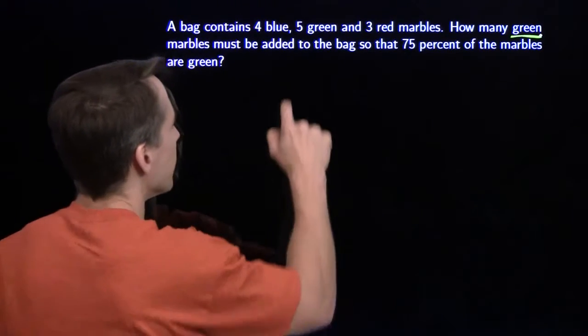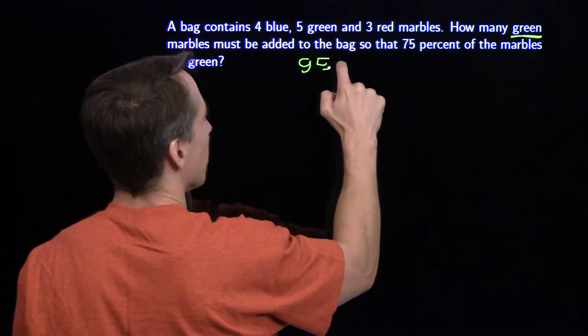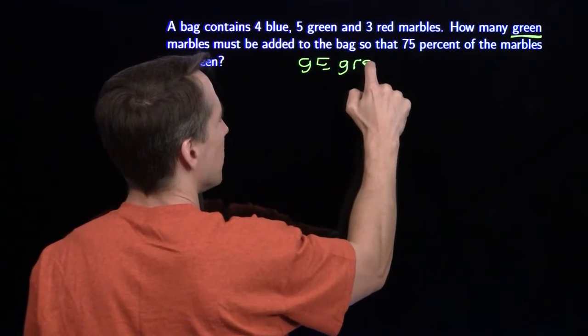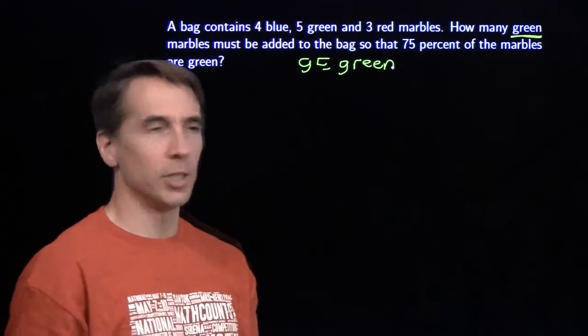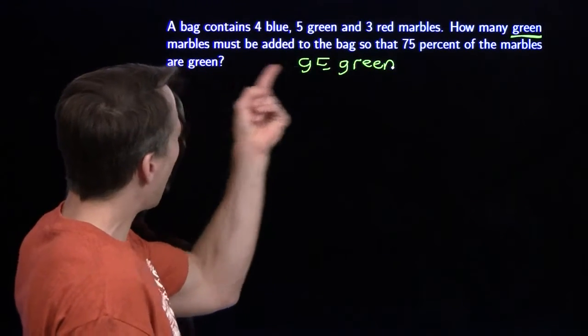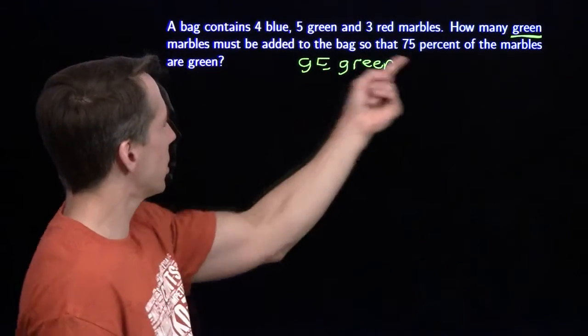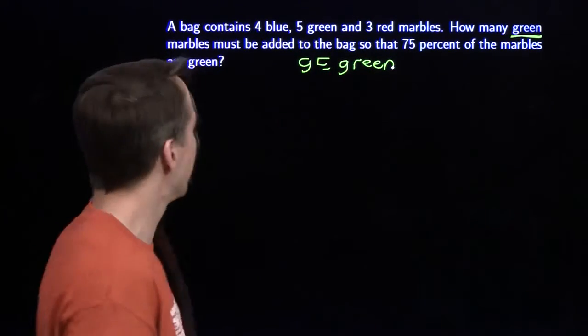I'm going to let G stand for the number of green marbles I'm adding. That's usually my first step with these word problems: assign a variable. I'm going to try to build an equation here, and hopefully that'll solve the problem. I'm going to add some green marbles, and then 75% of the marbles at the end will be green.